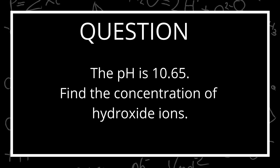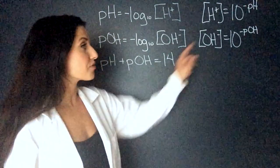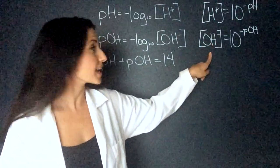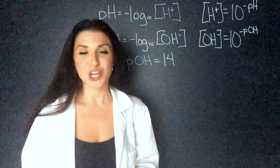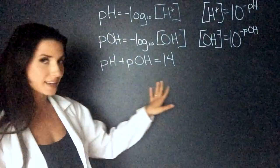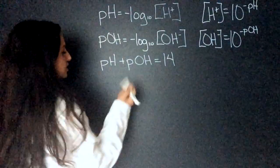The next question says that the pH is 10.65. Find the concentration of hydroxide ions. Now, this is a tricky question because to find the concentration of hydroxide ions, we need the pOH. But they've given us pH. So, this is where we're going to use this lovely third equation.